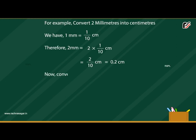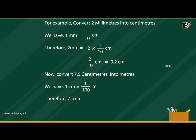Now, convert seven point five centimetres into metres. We have one centimetre is equal to one by one hundred metres. Therefore, seven point five centimetres is equal to seven point five multiplied by one upon one hundred metres, which equals seven point five by one hundred metres, equal to zero point zero seven five metres.